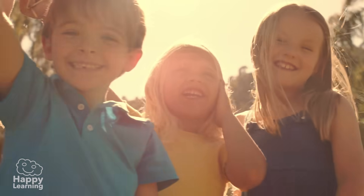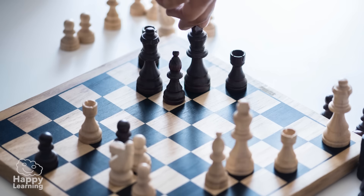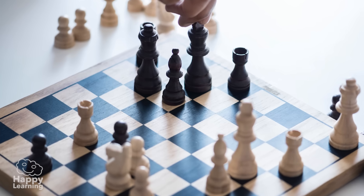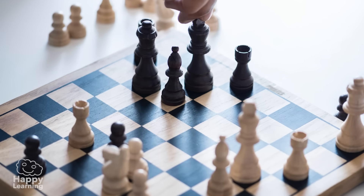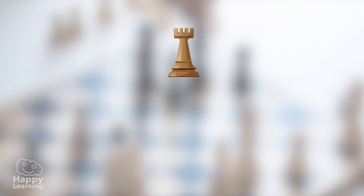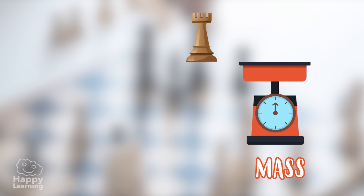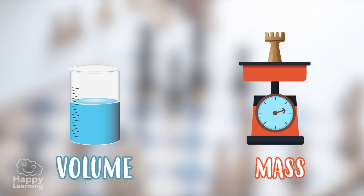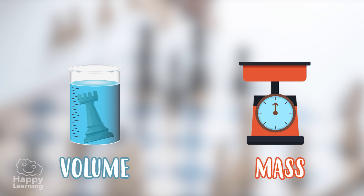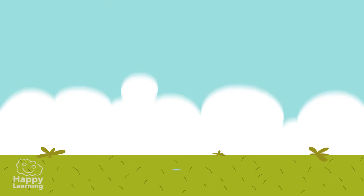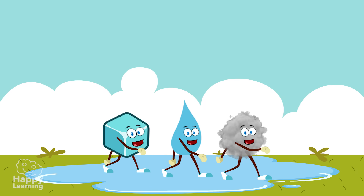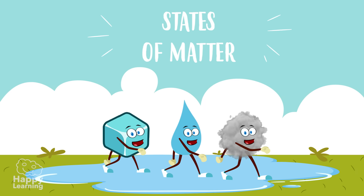Hello friends! Welcome to a new Happy Learning video! You all know that matter is what things are made of and that it possesses two fundamental properties. It has mass, which is the quantity of matter that it has, and volume, which is the space it occupies. Today we're going to learn about the states that matter can be in.